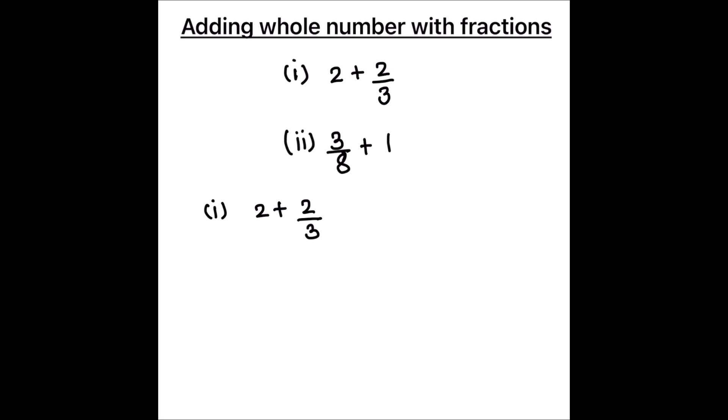The whole number can be written as a fraction because all numbers have a denominator of 1. So it can be written in the form of a fraction as 2 upon 1 plus 2 upon 3. The LCM of the denominators, which is 1 and 3, is 3.